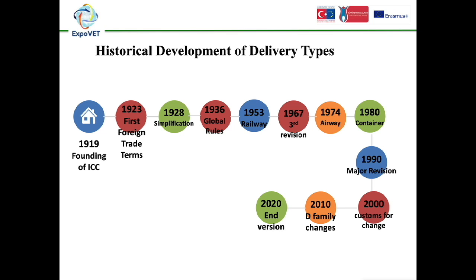In 1923, the first foreign trade terms of the ICC were born. In 1919, a common pool of foreign trade terms used by traders in 13 countries was studied, continued with six foreign trade terms, and published in 1923. At 1928, the 1923 edition was simplified and inconsistencies rearranged, with the study expanded to cover 30 countries. At 1936, Global Rules for International Trade were published for the first time as the first Incoterms bulletin, including FAS, FOB, CNF, CIF, X-ship, and X-quay. In 1953, rail transport was included, and after World War II suspensions, three new delivery methods were introduced: DCP, FOR, and FOT.